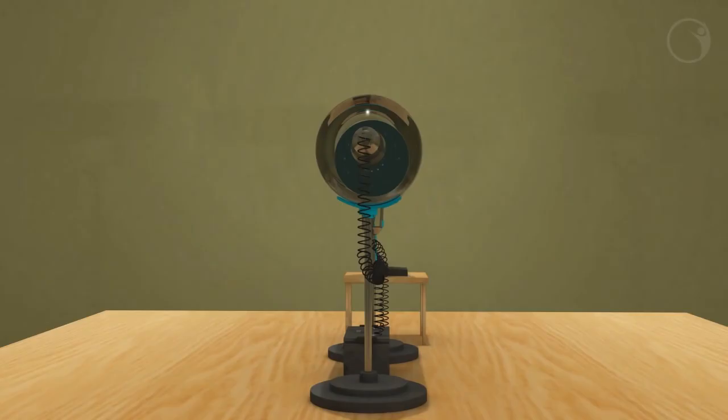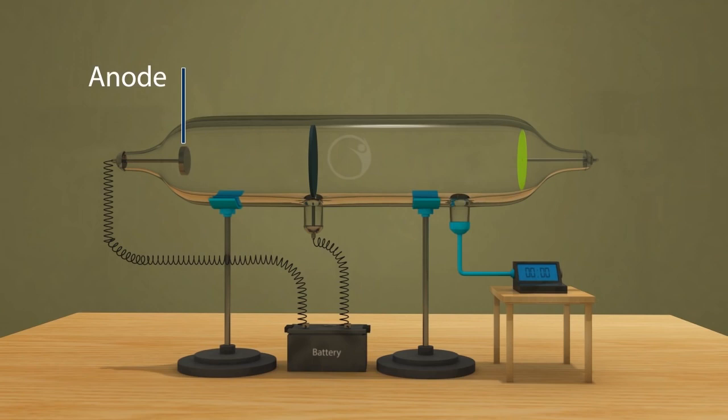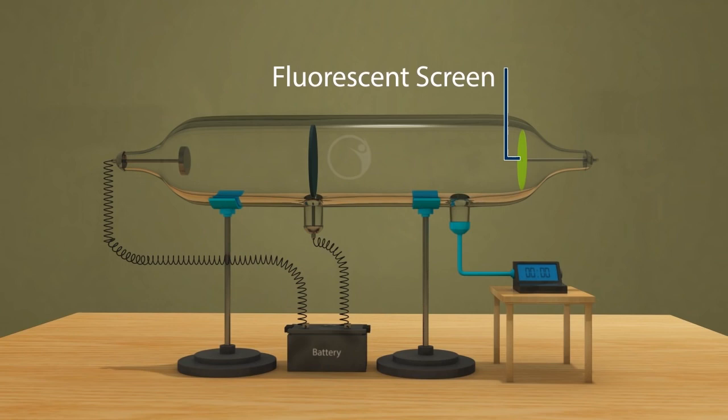Canal Rays: Let us look at Goldstein's experiment setup. Goldstein used a discharge tube, like that of Thomson, with an anode and a perforated cathode in the middle. He also used a fluorescent screen at the other end to sense the rays.